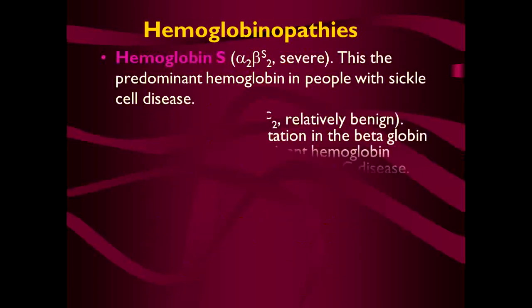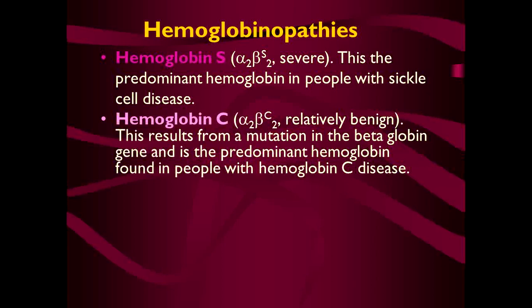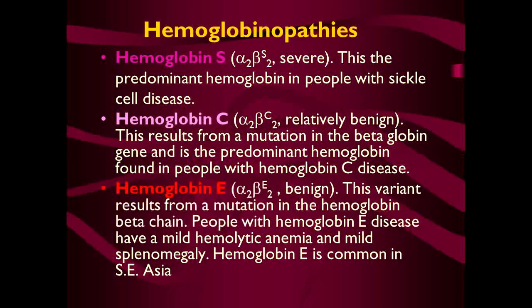Other varieties of hemoglobin include hemoglobin S (alpha-2, beta-2 with S substitution), which is sickle cell anemia. Hemoglobin C results from a mutation in the beta-globin gene — it is a mild disease. Similarly, hemoglobin E is a variant from mutation in the beta chain; people with hemoglobin E disease have mild hemolysis and mild splenomegaly and it is found in Southeast Asia.